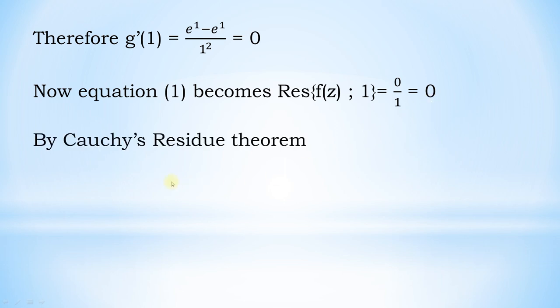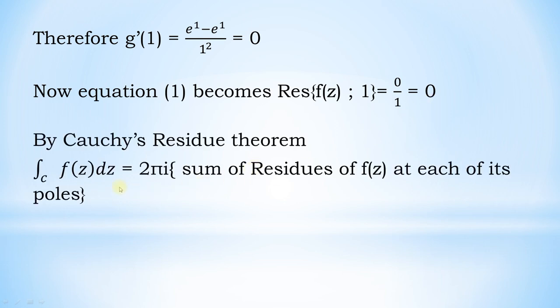We know by Cauchy's residue theorem: the integral of f(z) dz over C equals 2πi into the sum of residues of f(z) at each of its poles.